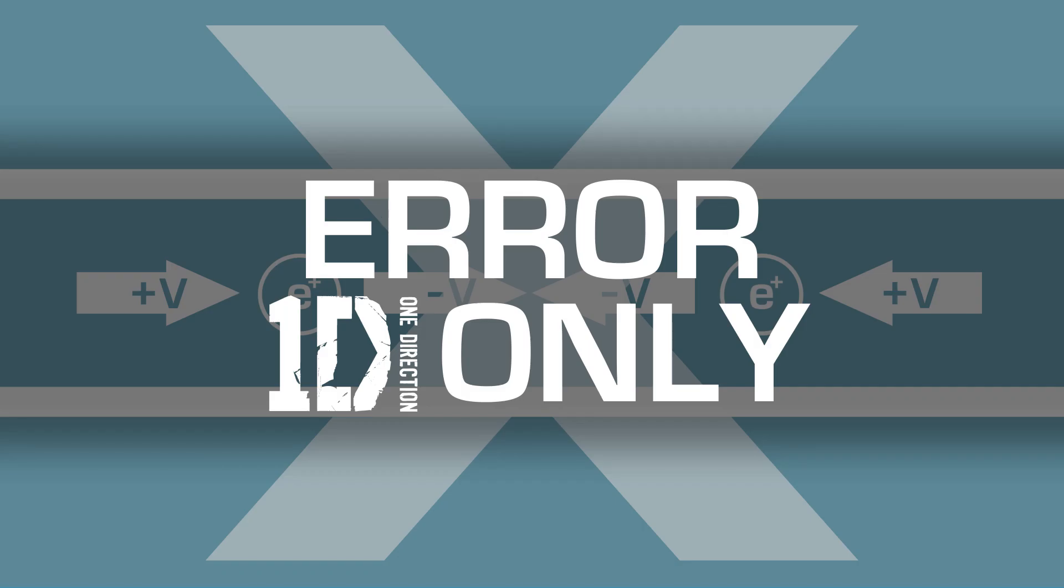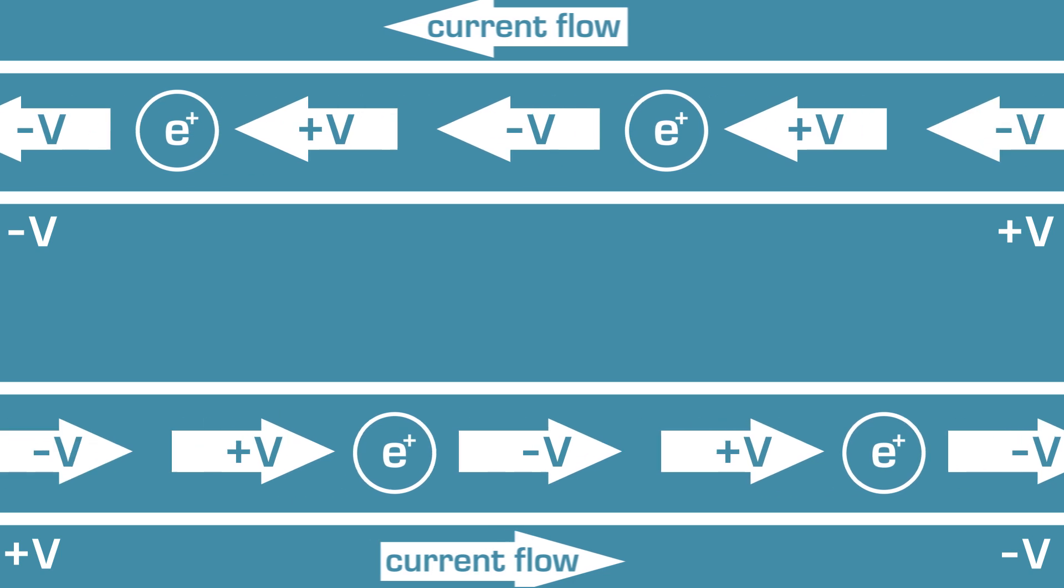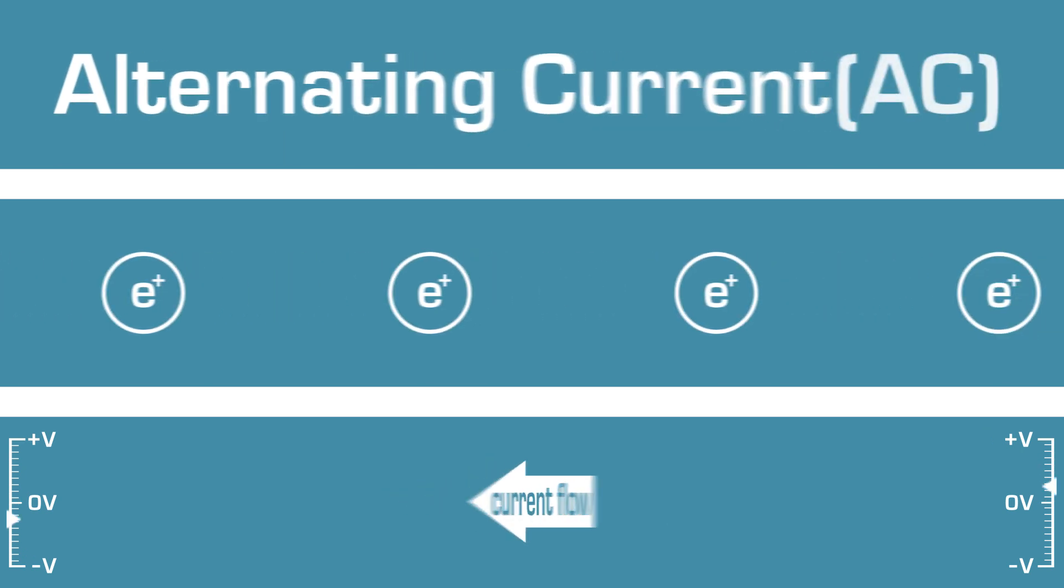Current can flow through a circuit in only one direction at a time. If that current always flows in the same direction, it's called direct current or DC. But if it regularly changes directions, it's called an alternating current or AC.